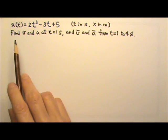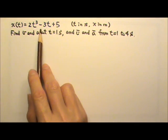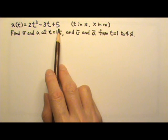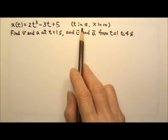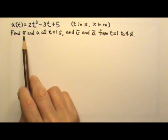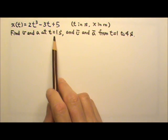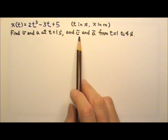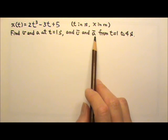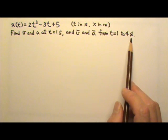An object in one-dimensional motion has a position given by this equation, where t is in seconds and x is in meters. Find the object's velocity and acceleration at t equals 1 second, and the average velocity and the average acceleration from t equals 1 to 4 seconds.